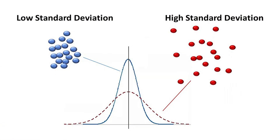Take a look at these two data sets. Two-thirds of all the data points for each set are going to be one standard deviation away from the central point. The blue set is much more tightly clustered, so two-thirds of those data points are still going to be very close to the central point. Whereas for the red set, that same standard deviation — that same two-thirds — is going to be a larger distance away from the central point.